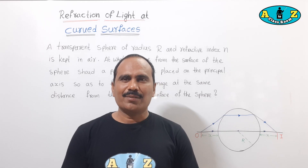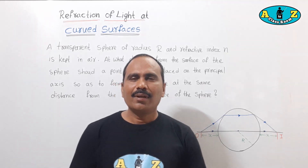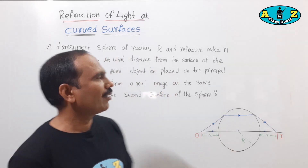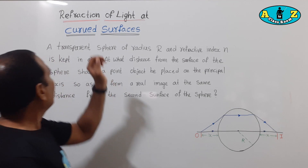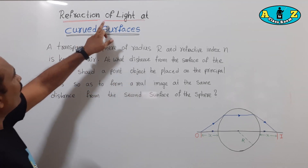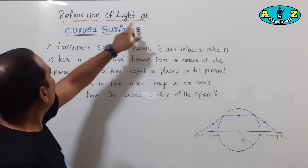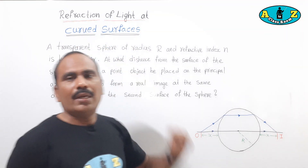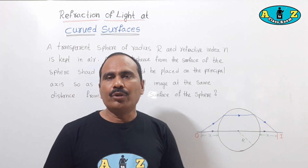Welcome to A to Z Classroom. Today's topic is refraction of light at curved surfaces. Example 2.